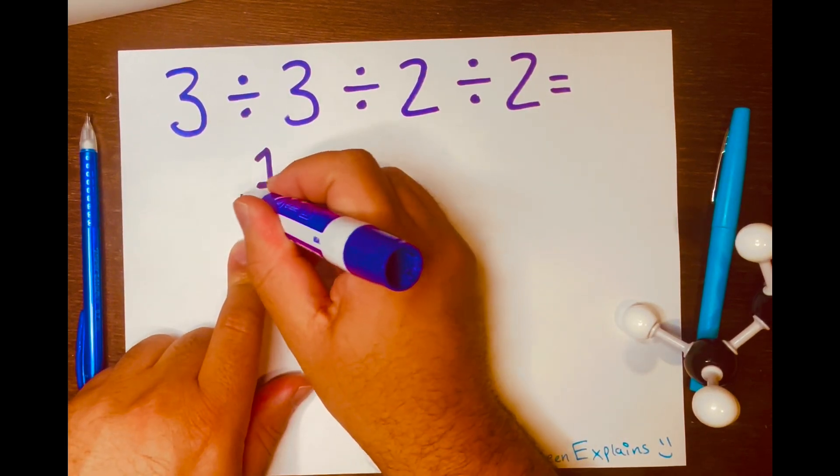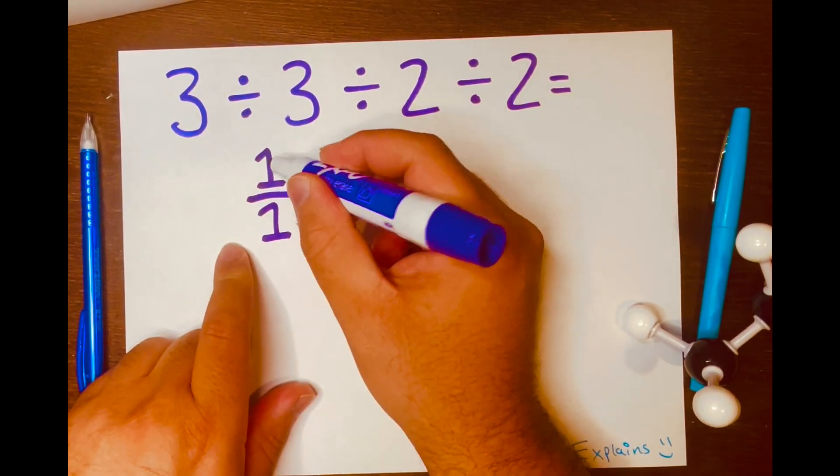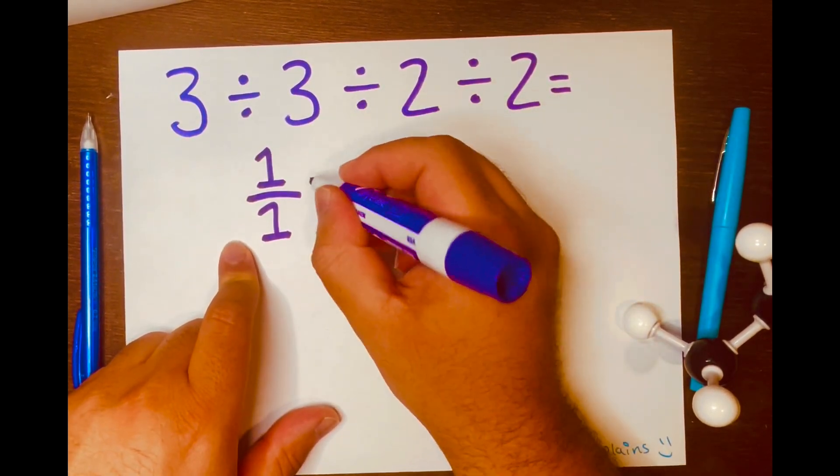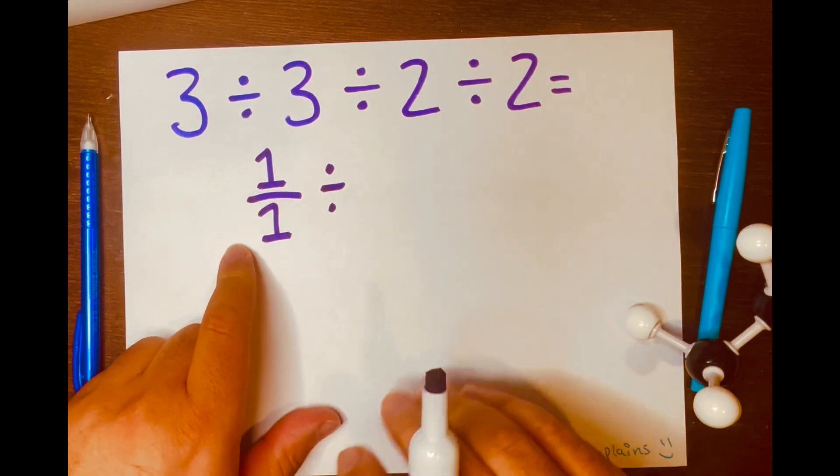And I want to turn 1 into a fraction because 1 over 1 equals 1 and does not change the value. And then I'll bring down the division symbol down, right? Easy.